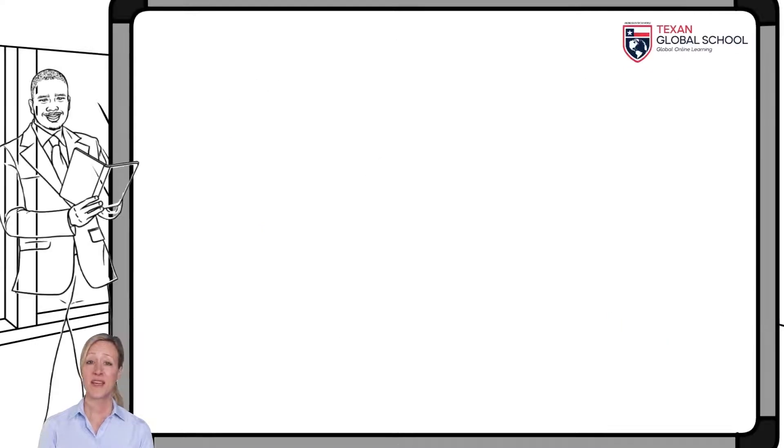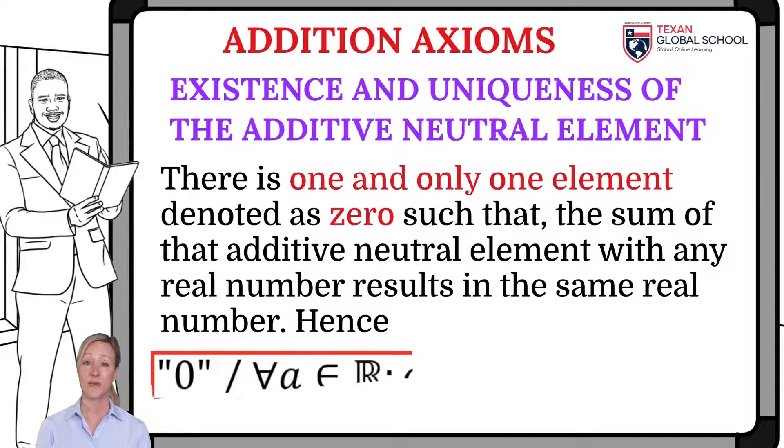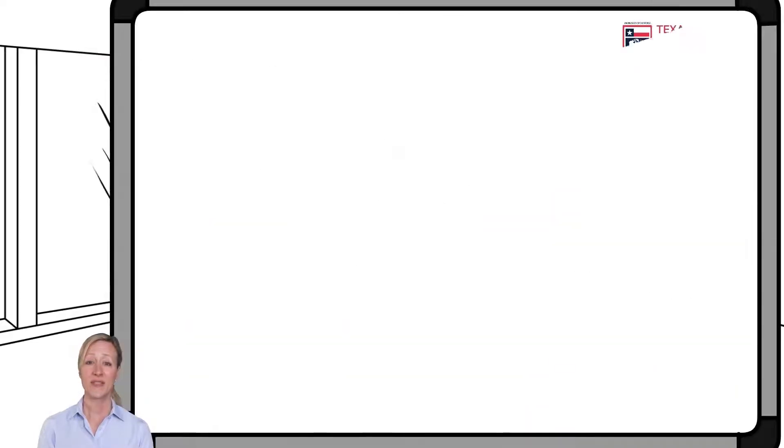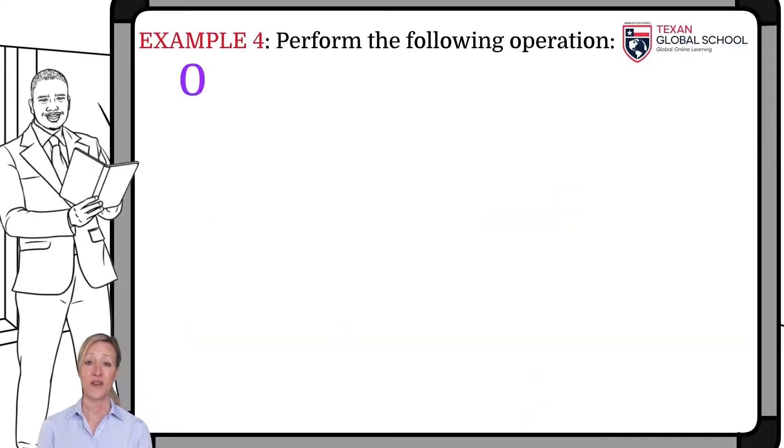Another axiom indicates that there exists one and only one element denoted as 0, such that, the sum of this additive neutral element with any real number results in the same real number. This axiom is called the existence and uniqueness of the additive neutral element.